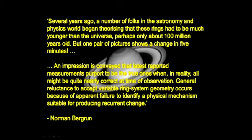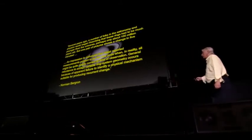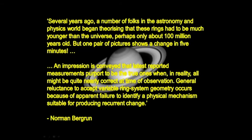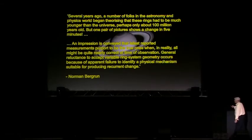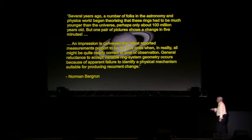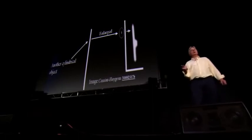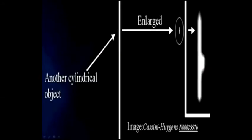But one pair of pictures shows a change in just five minutes. There's a general reluctance to accept variable ring system geometry because of an apparent failure to identify a physical mechanism suitable for producing recurrent change — in other words, classic mainstream science: if we can't explain it, we'll kid ourselves it doesn't exist. He also found electromagnetic vehicles in the pictures coming back from Voyager, and the Cassini spacecraft found them too.